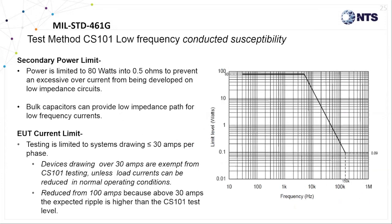The CS101 test is limited to equipment drawing 30 amps or less. Equipment drawing more than 30 amps continuously are exempt from this test, which was reduced from 100 amps back in MIL-Standard 461F and earlier versions since data revealed that the ripple voltage level on systems drawing more than 30 amps is generally higher than the curve two test criteria.